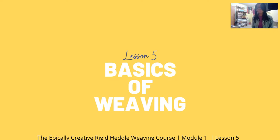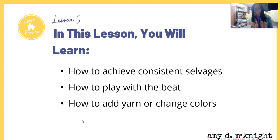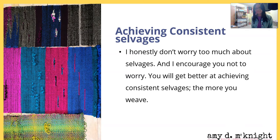Hello again and welcome! My name is Amy D. McKnight and we are in lesson five, basics of weaving. This is the Epically Creative Rigid Heddle Weaving Course, module one, lesson five. In this lesson you will learn how to achieve consistent salvages, how to play with the beat, and how to add yarn or change your colors.